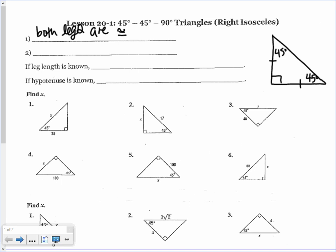Pick a variable — I'm going to pick S for the side length, but you can use X, A, or whatever letter you like. Then I'm going to find the hypotenuse using the Pythagorean theorem: A squared plus B squared equals C squared. Since both A and B are S, we have S squared plus S squared, which equals 2S squared.